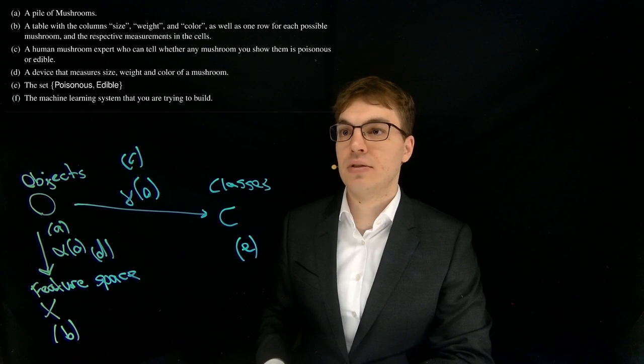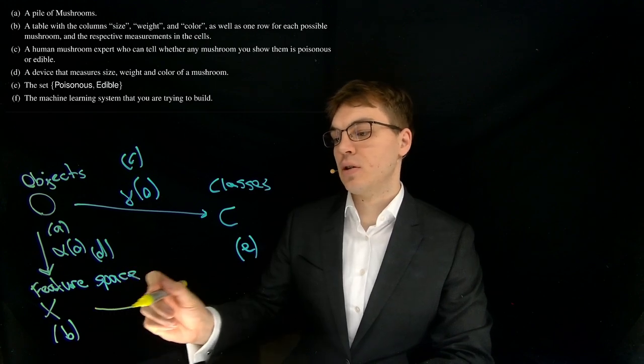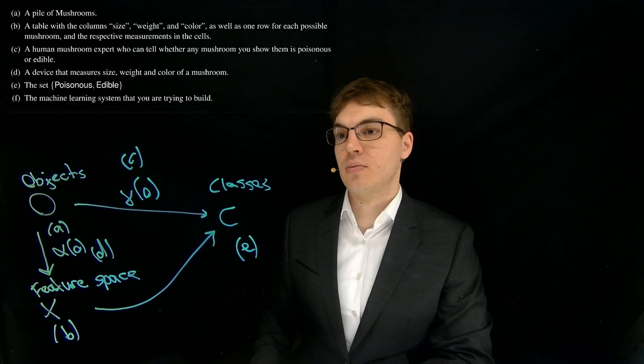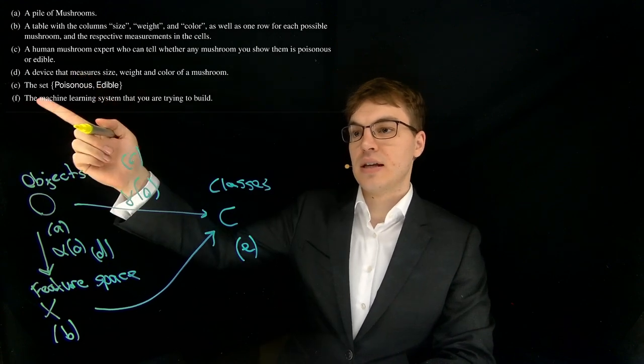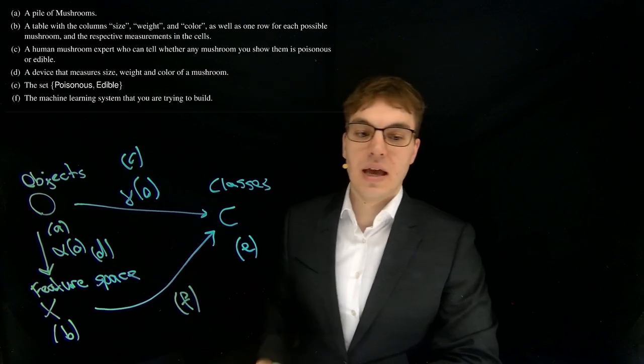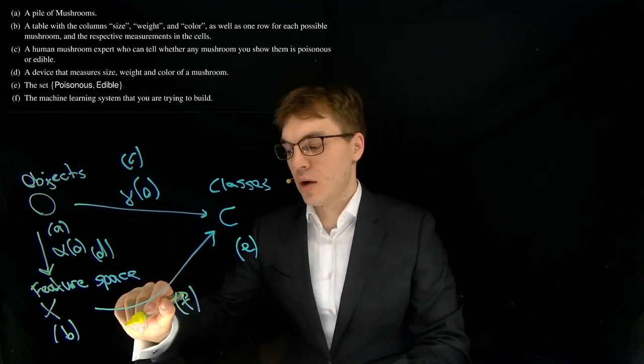We have values for size, weight and color. And the machine learning system that we are trying to build should then be able to derive the classes from this. So this is exactly what we have here as F. And we gave this a name in the lecture and this is Y of X.